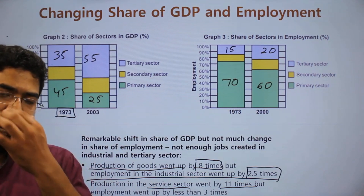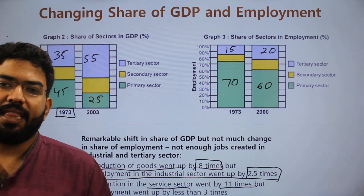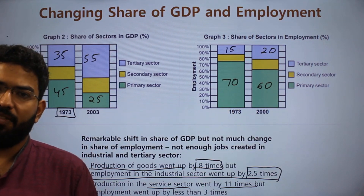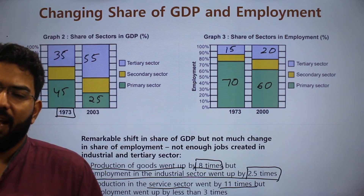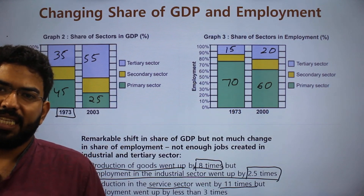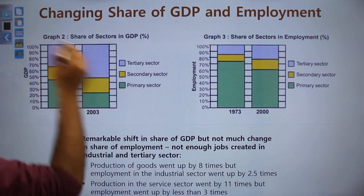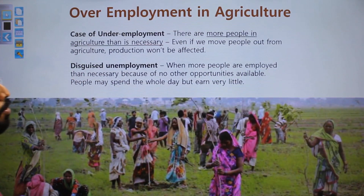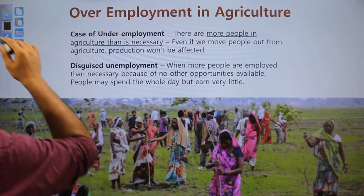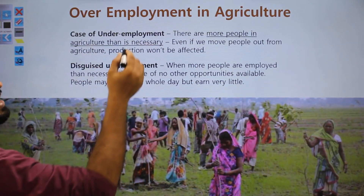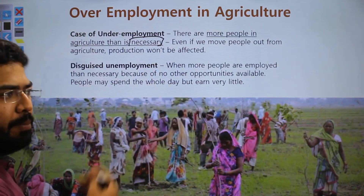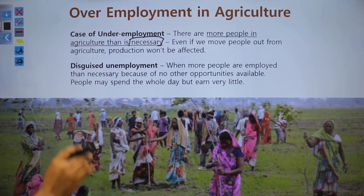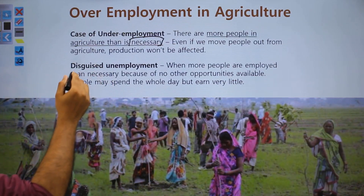Because of this changing scenario, employment in the primary sector has become stagnant — more people are still working in the primary sector even though its share is reducing every year. This has led to a situation of underemployment, also called disguised unemployment, where more people are working in agriculture than is necessary. Even if some people were removed and moved to other sectors, agricultural production would not suffer.